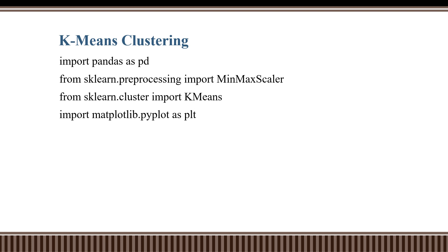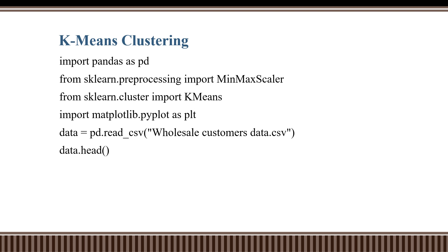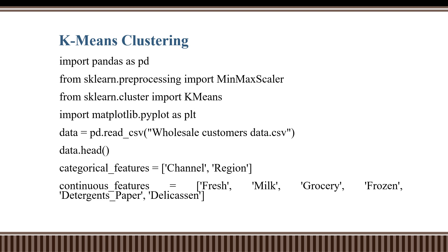In the next step, we load the wholesale customers dataset which we have downloaded. We read the data from a CSV file and store it in a DataFrame named 'data'. We then view some rows using data.head() to get an idea of what the dataset looks like. We define a list of categorical features — such as 'channel' and 'region' — and a list of continuous features where the columns contain numerical values.